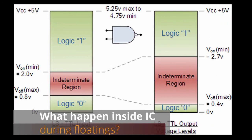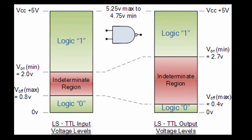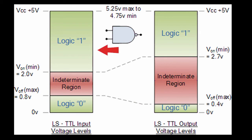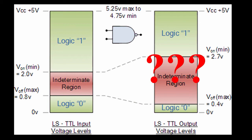When the input of the IC is floating, this means the input is not connected to any high or low voltage state. In this situation, the input is in an indeterminate state and its value will oscillate between 1 and 0. This will cause our output to become unpredictable because we do not know the exact value of the input in the circuit.